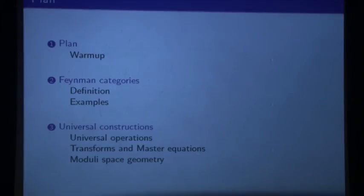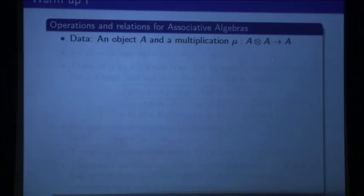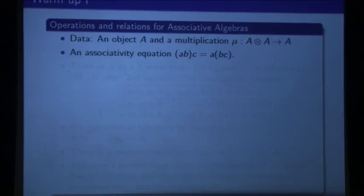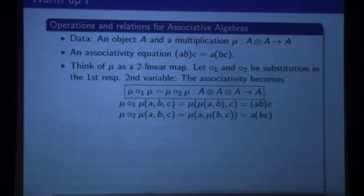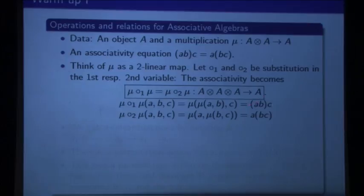So what do I mean by operations and relations? Say I have an associative algebra that has one operation: multiplication. For this I wouldn't really need operads — this is a simple example. What kind of relation would I have? It's an associativity equation — that's a relation for the multiplication. So how can I think about this? I sort of want to forget that I have this 'a' — it's all about forgetting the letter a. I have this mu, which is a bilinear thing, and I can rewrite the associativity in this strange form. People that know operads will recognize this immediately, but I did this for people that don't know operads.